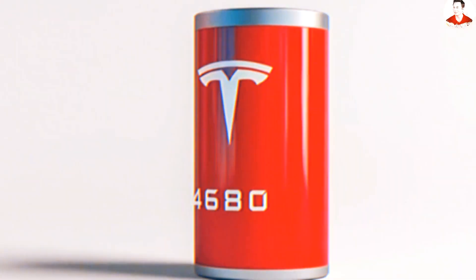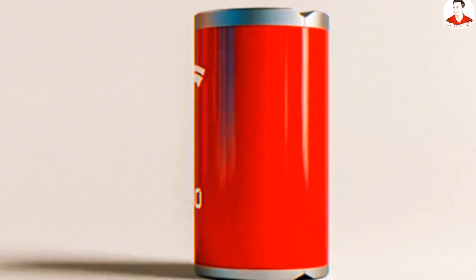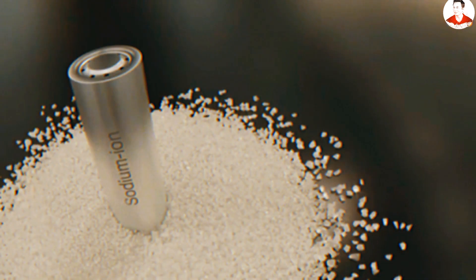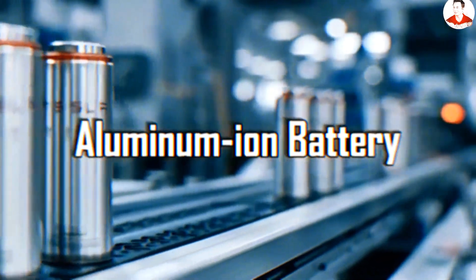Elon Musk has just lit a fuse under the entire EV world. Tesla's all-new battery is finally here. This time, it's not the 4680 Gen 2 or sodium-ion. It's Tesla's first aluminum-ion battery.